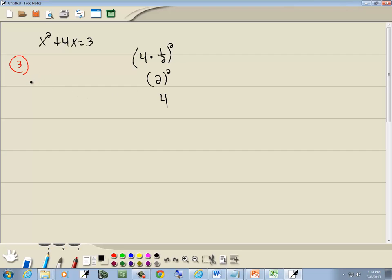We then add that to both sides. So I got x squared plus 4x plus 4 equals 3 plus 4. So we got x squared plus 4x plus 4 equals 7.